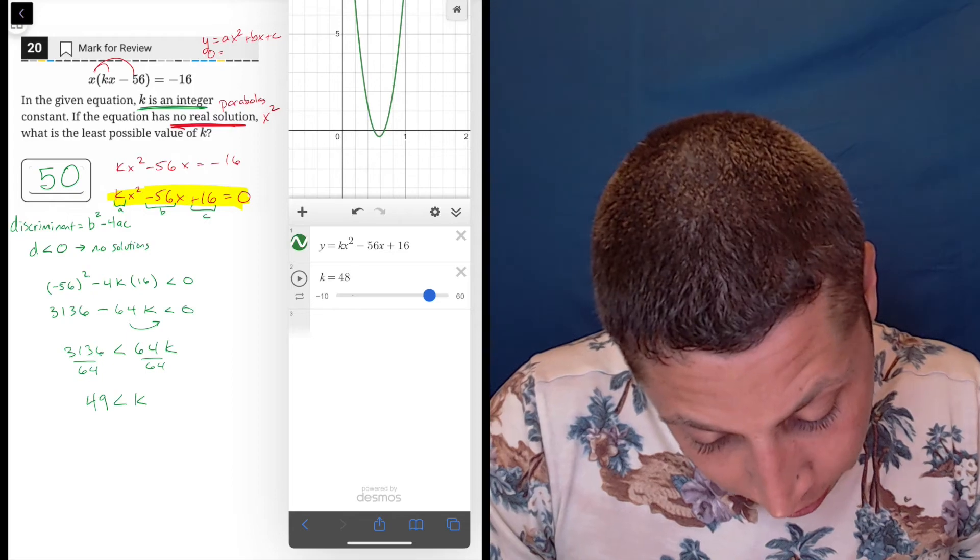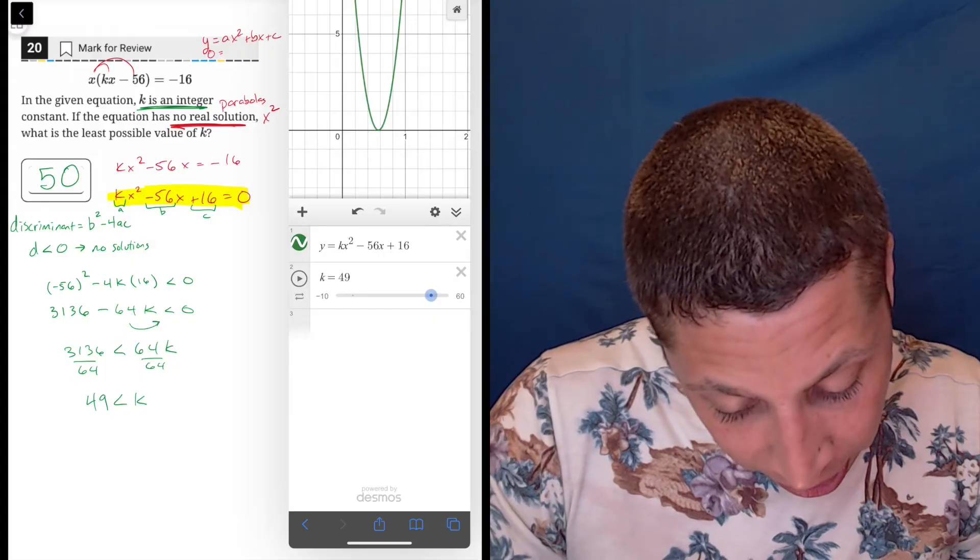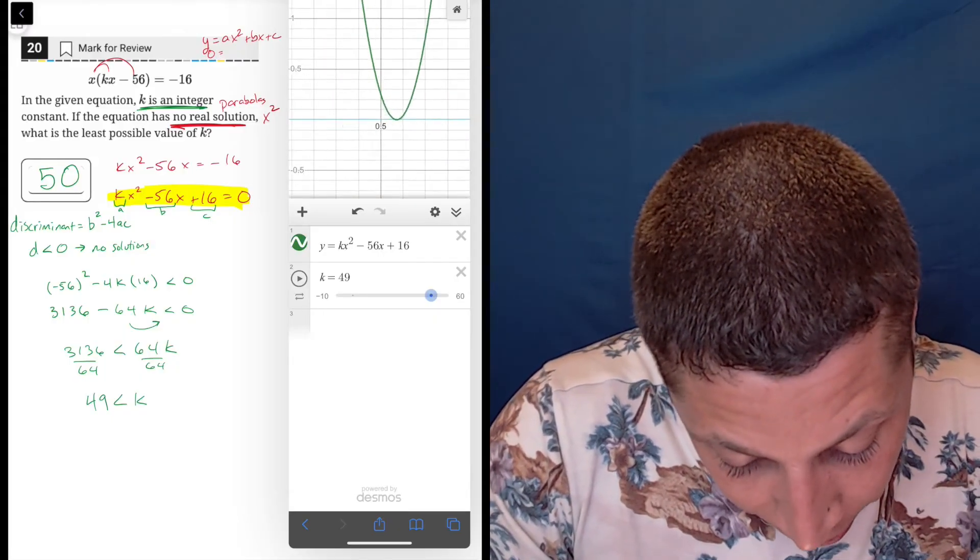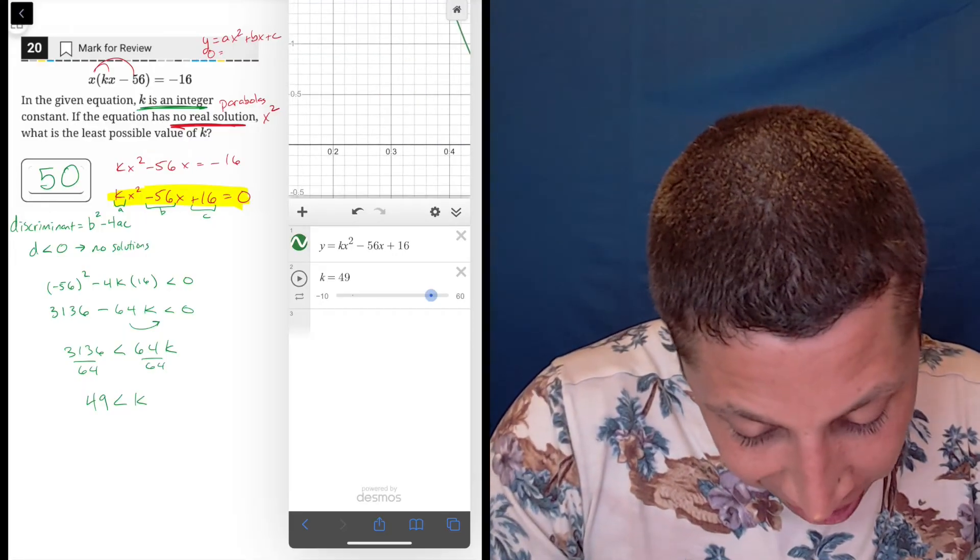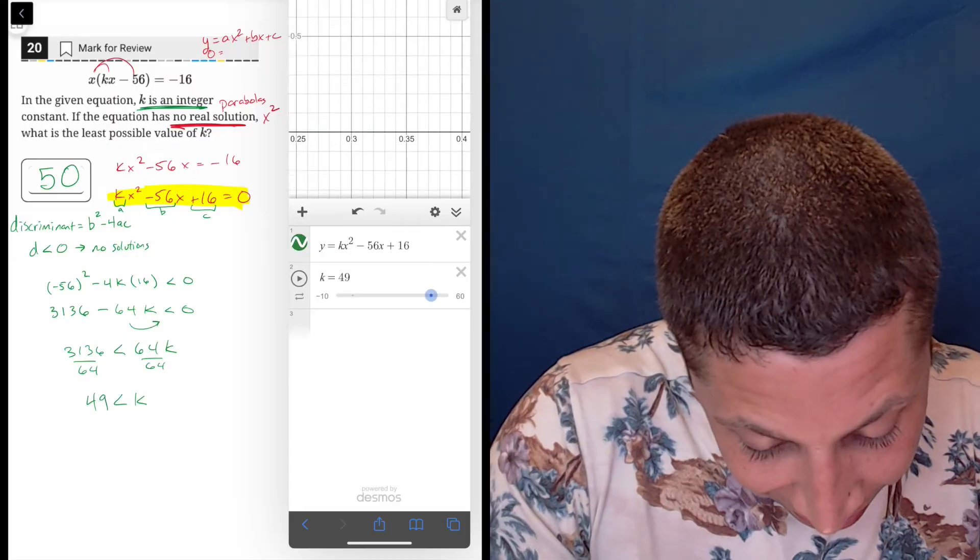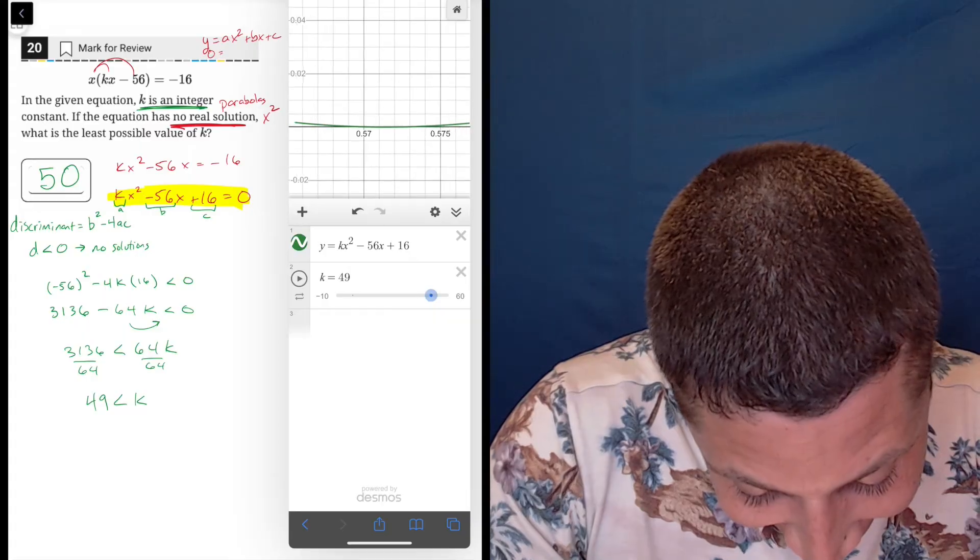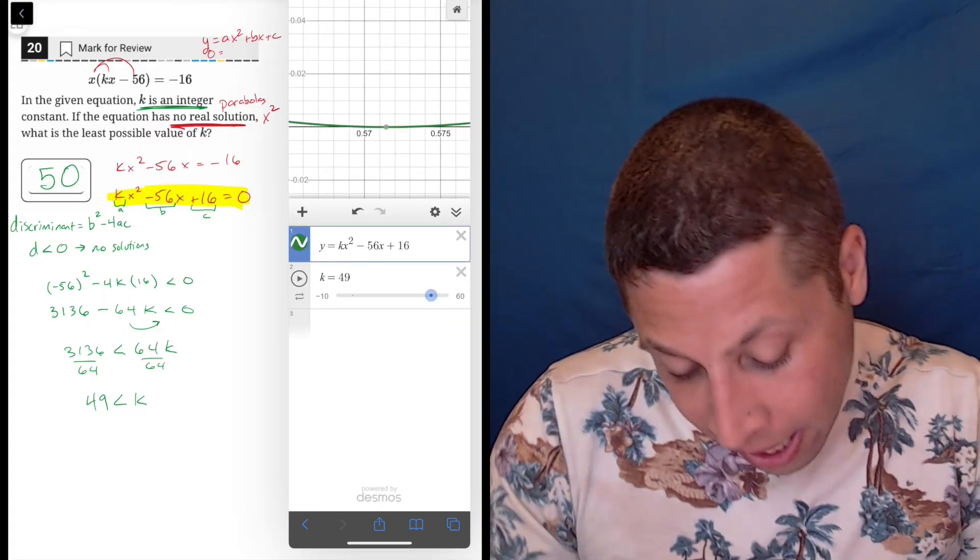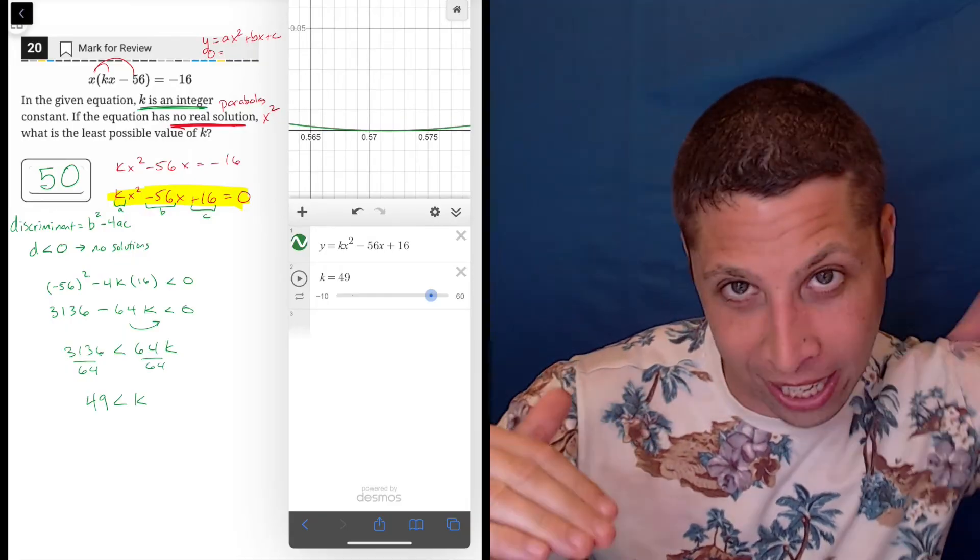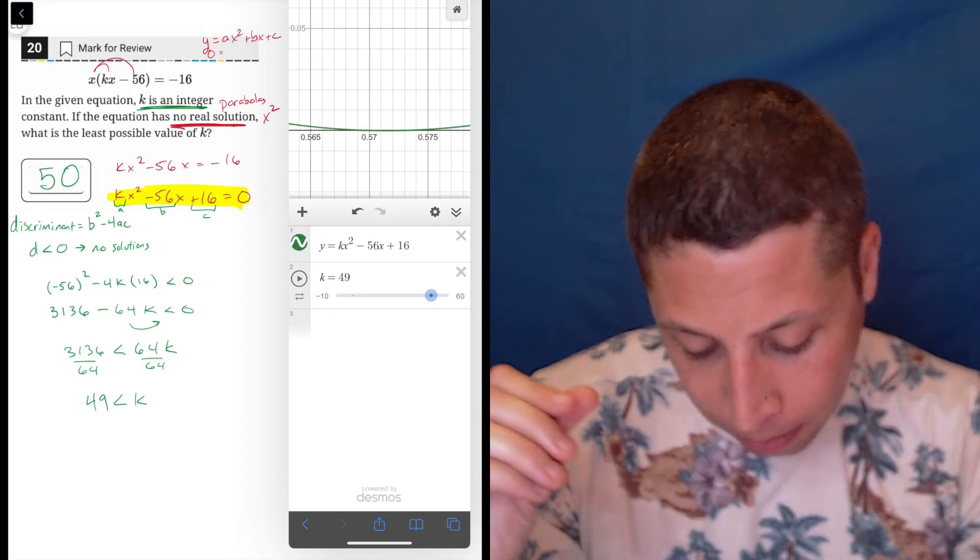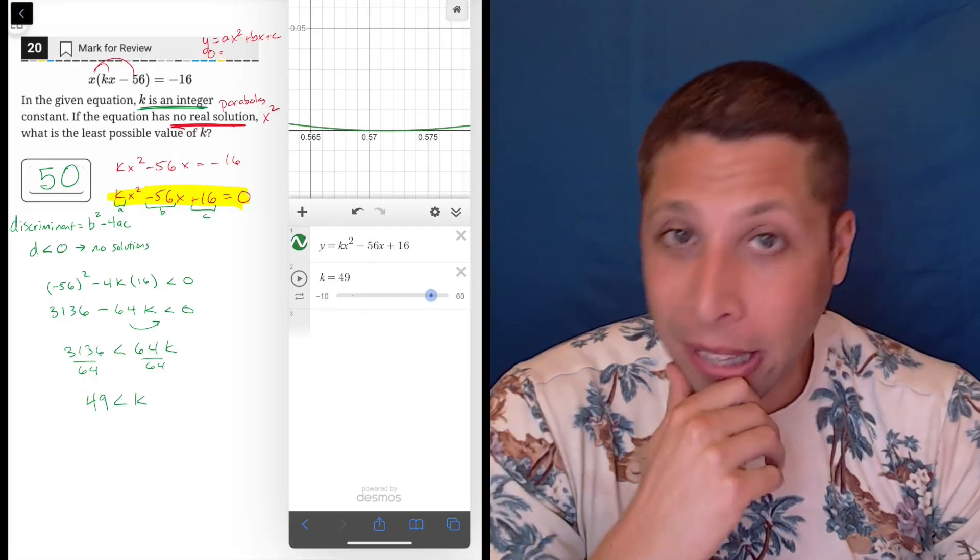And then what about 49? See, this is the problem with the sliders. At 49, if we're really careful, we can see that it's just dipping below it. You're going to really see it. It's there, just dipping below. So it's tricky. I thought it'd be more clear about it. You can play with the zoom a little bit. Eventually you will see that it comes below, but it's not as definitive as I would like it to be.